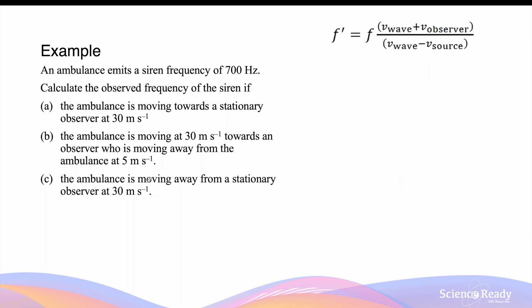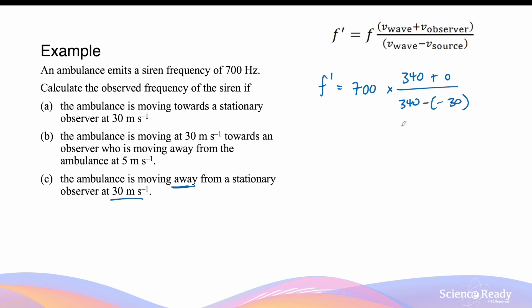Part C: The ambulance is now moving away from the stationary observer at 30 m/s. The observed frequency is equal to 700 Hz multiplied by (340 + 0) divided by (340 minus the velocity of the source). Since the ambulance is moving away from the observer, the speed of 30 m/s is written as minus 30 m/s. So in the denominator we write 340 minus (minus 30), which gives a lower frequency of 643 Hz.